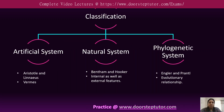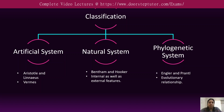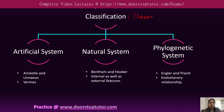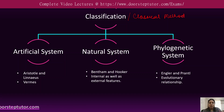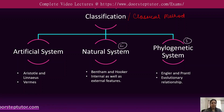Before that, let's discuss the classification methods given for the classification of organisms. This is also known as the classical method of taxonomy. Three different classification methods were used for grouping or classifying organisms: the first is the artificial system, the second is the natural system, and the third is the phylogenetic system.